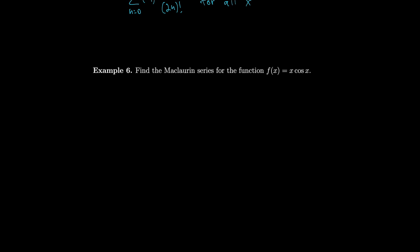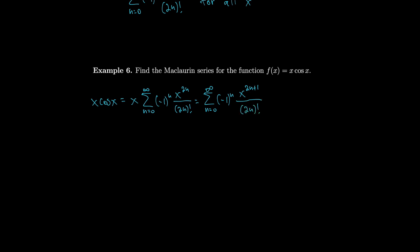For the McLaurin series of x·cos(x), instead of computing derivatives we multiply the cosine series by x. That gives x times the sum of (-1)^n · x^{2n}/(2n)!, which equals the sum of (-1)^n · x^{2n+1}/(2n)!, since we can bring the x inside the series as it depends only on n.